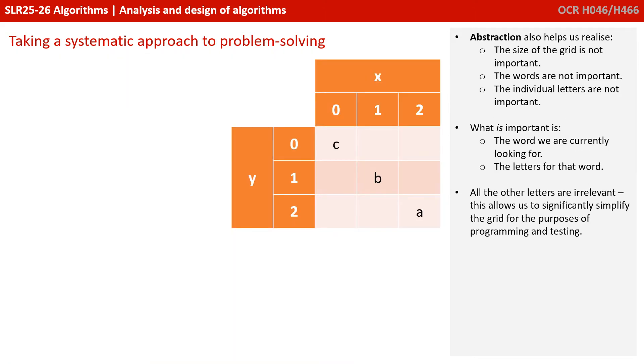If we take the concept of abstraction just a little further, the size of the grid is actually not important. And in fact, even the words that we're looking for are not important and the individual letters are not important. The only thing we're really interested in is the current word we're looking for and the letters for that word in the grid. All the other letters are irrelevant. So we could simplify our grid for the purpose of programming and testing into something like this.